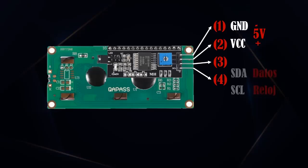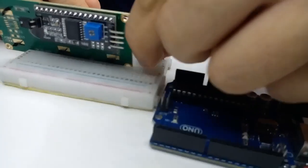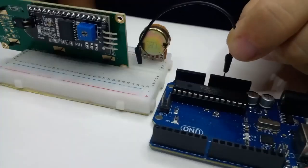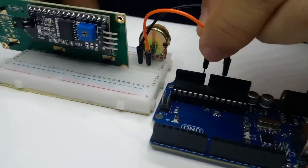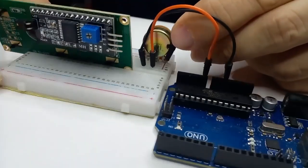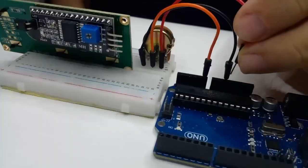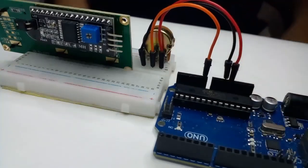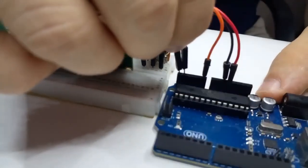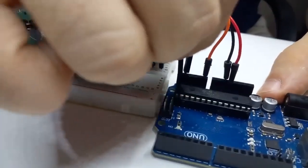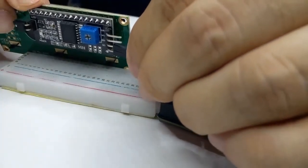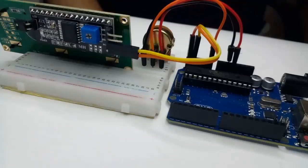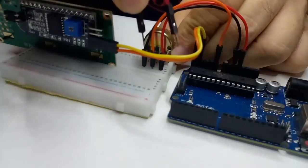2 for power and 2 for communications. We connect one end pin of the potentiometer to the GND pin of the Arduino board. We connect the central pin of the potentiometer to pin A0 of the board. We connect the other end pin of the potentiometer to the 5-volt pin of the board. We connect the I2C communication pins of the Arduino board — that is, SDA and SCL — with the SDA and SCL communication pins of the LCD screen.